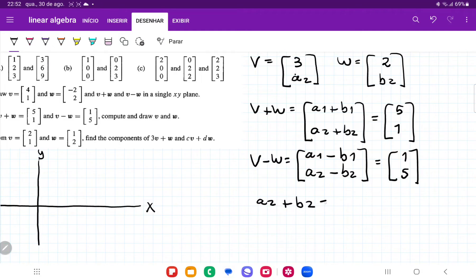So a2 plus b2 is equal to 1, and a2 minus b2 is equal to 5. So once more, let's add these. So we have that 2a2 is equal to, because these cancel out, the b2s, that's going to be equal to 6. And so we have here that a2 is equal to 3 when we divide both sides by 2.